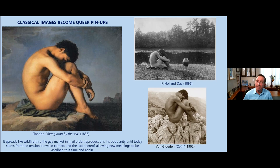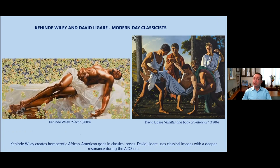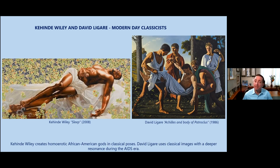There's a very famous image by the supposedly heterosexual artist Flandrin called Young Man by the Sea. The minute this painting was exhibited, it spread like wildfire to the gay market in mail-order reproductions. Its popularity probably comes from the tension between the classic concept of context and the lack of context, which allows the viewer to project their own meanings time and time again. Von Gloeden called his copy of it 'Cain,' probably alluding to a gay man being expelled from his family and friends for being homosexual. This idea of classical imagery to portray homoerotic visuals exists today — Kehinde Wiley, who did the official portrait of Barack Obama, creates homoerotic African American gods in classical poses. And David Laguerre created classical images during the AIDS era, adding another layer of resonance, like his painting of Achilles and the body of Patroclus.